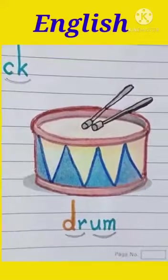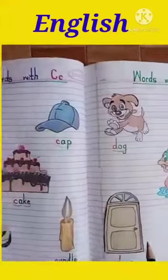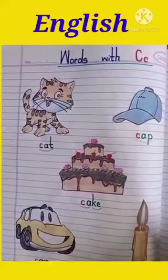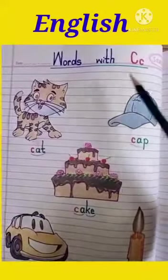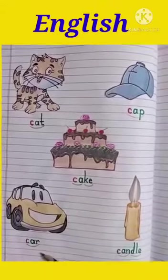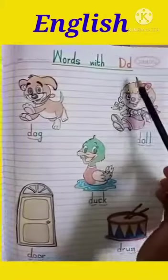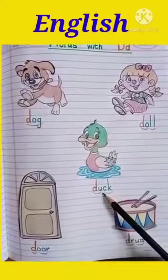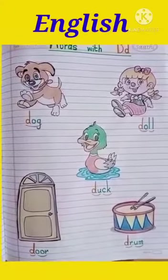See children, today we got five words each with letter C and D. Let's revise once more, then we will write in our English copy. Words with C: Cat, Cap, Cake, Car, Candle. Words with D: Dog, Doll, Duck, Door, and Drum.